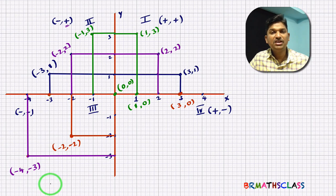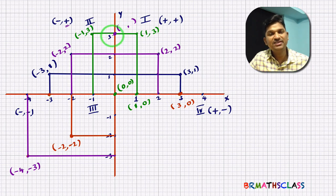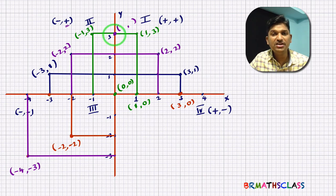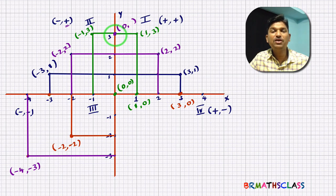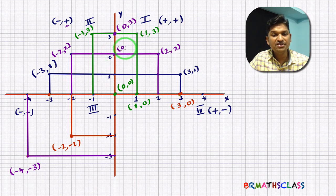If a point lies on the y-axis, the x-coordinate is the perpendicular distance from the point to the y-axis. Since the point is on the y-axis, there is no distance — its x-coordinate is 0. The y-coordinate — perpendicular distance from the point to the x-axis — is 3 units. So this point is (0, 3). Similarly, the next point is (0, 2).